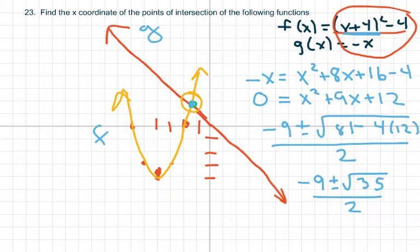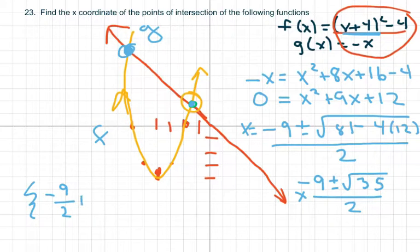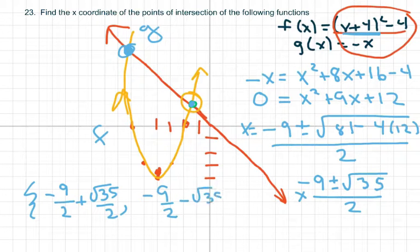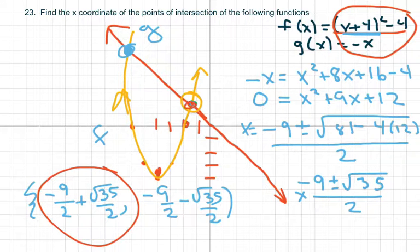We want the x-coordinate here. So basically, this is your answer. This is x equals, by the way. And if you extend this, so there's your two points right in there. So the way they have it is negative 9 over 2 plus square root of 35 over 2, and negative 9 over 2 minus square root of 35 over 2. So this one would be this one right here, and this one would be this one.